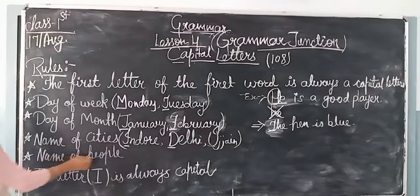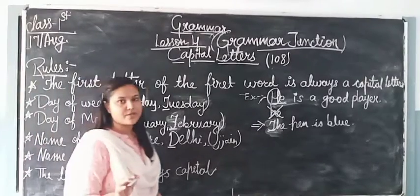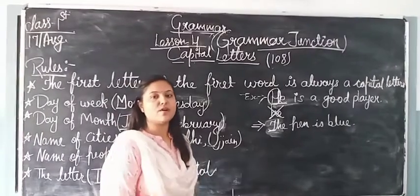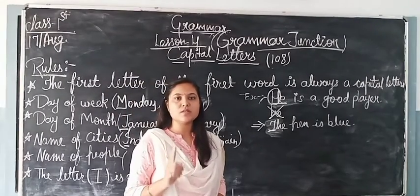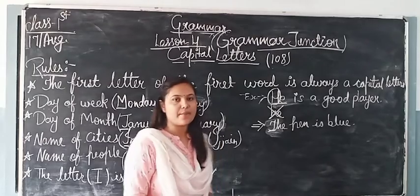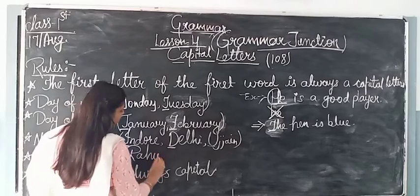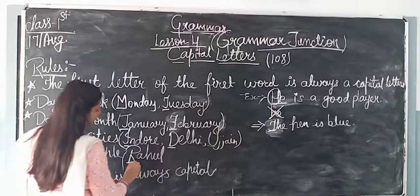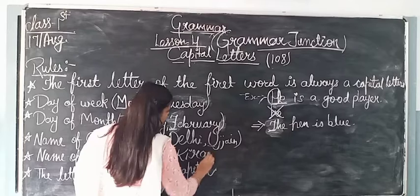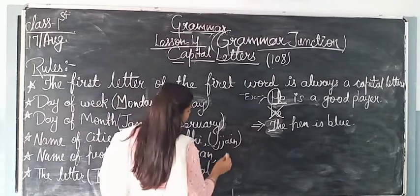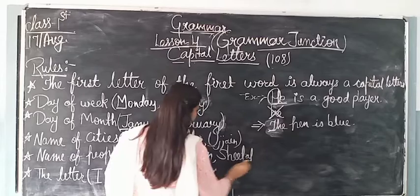Names of people — a person's name is always capital. For example, Rahul — R is capital. Kiran — K is capital. Shekel — S is capital.